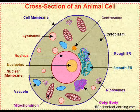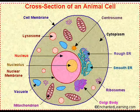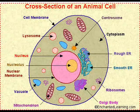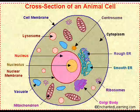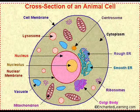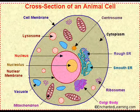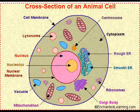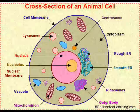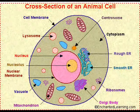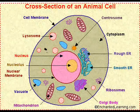Mitochondria is the guy that controls the electricity bills in the hotel. He produces energy from nutrients we consume, so the cell will always be in tip-top shape.